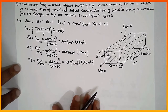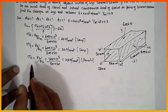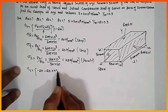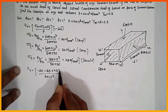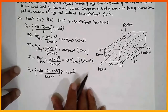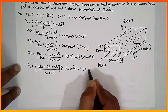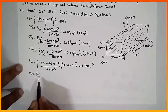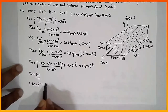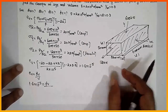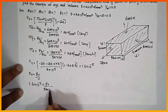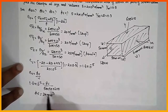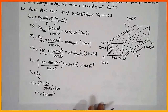Now substitute these values into the volumetric strain formula. εᵥ = (−20 + (−20) + 48) / (2×10⁵) × (1 − 2×0.3). Therefore εᵥ = 1.6×10⁻⁵. Now εᵥ = δV/V. Volume = 50×50×600. Cross-multiplying, δV = 24 mm³.